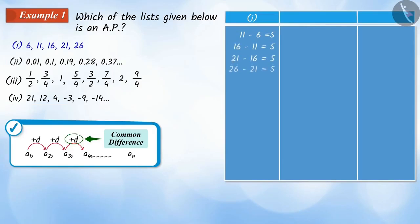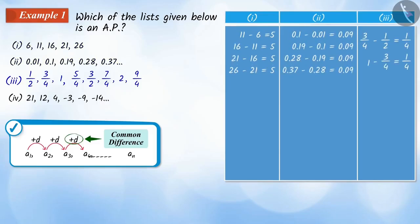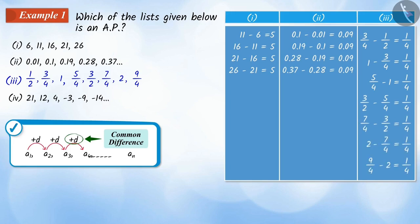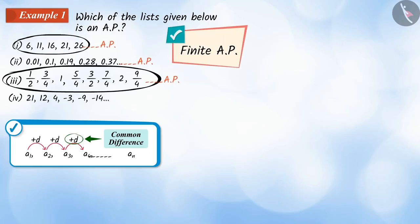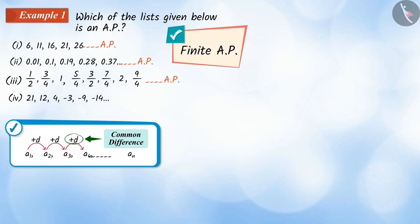If we look at the first, second, and third list here, for each of them we get the same difference between every two consecutive terms. Hence, these three lists are an AP, where the first and the third are finite APs and the second is an infinite AP.